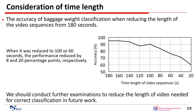We also investigated the accuracy of baggage weight classification when reducing the length of video sequences from 180 seconds. When reduced to 60 seconds, performance reduced by 8 percentage points. When reduced to 100 seconds, performance reduced by 20 percentage points. We believe that the degradation in performance is related to the periodicity of body sway. We should conduct further examination to reduce the length of video needed for correct classification in future work.